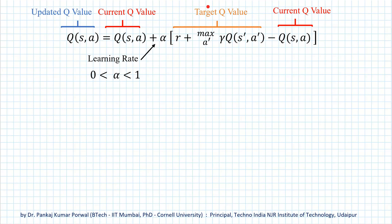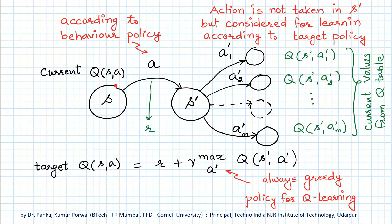Let's understand exactly what this target Q-value is. When our agent is in state S, it has some estimate for the current Q-value. The agent takes action A according to its behavior policy, and after taking action A it receives immediate reward R and transitions to new state S'. Once in state S', it knows all the actions available in that state and also knows the Q-values corresponding to all state-action pairs for state S' from the current Q-table. An important point is that the agent does not actually take any of these actions — it only considers them for learning the updated Q-value, and that consideration is done according to what we call the target policy.